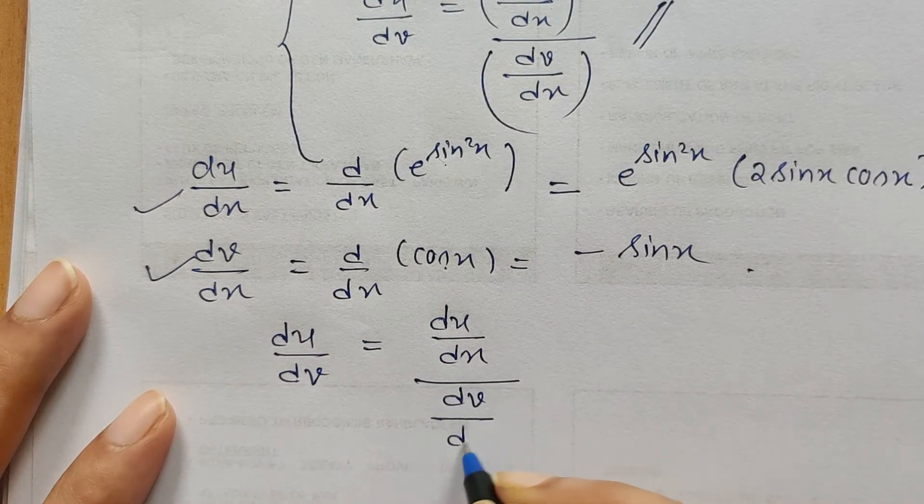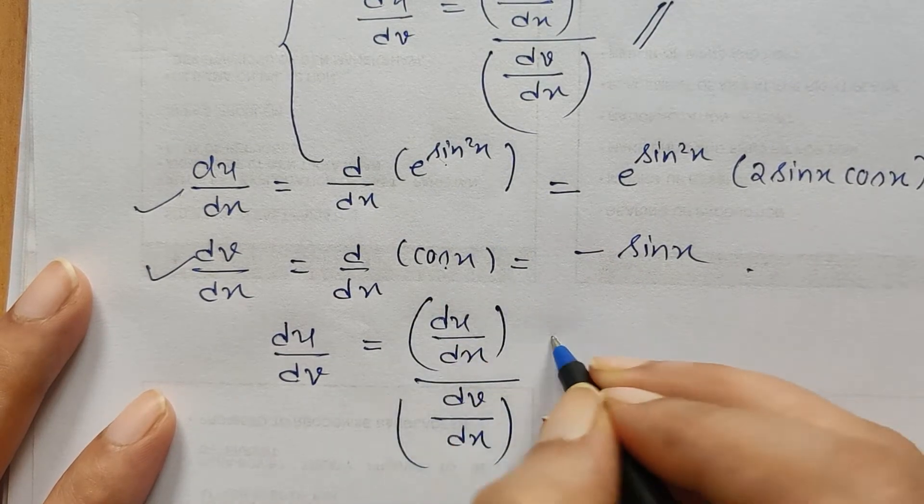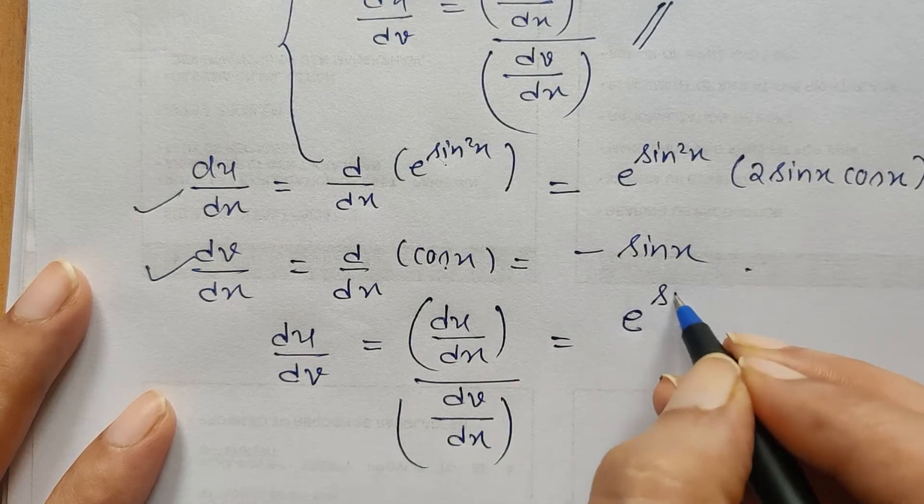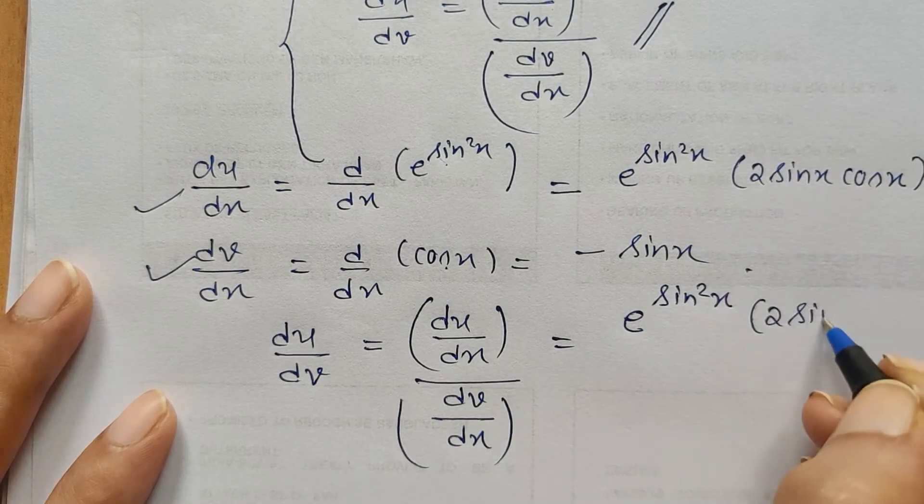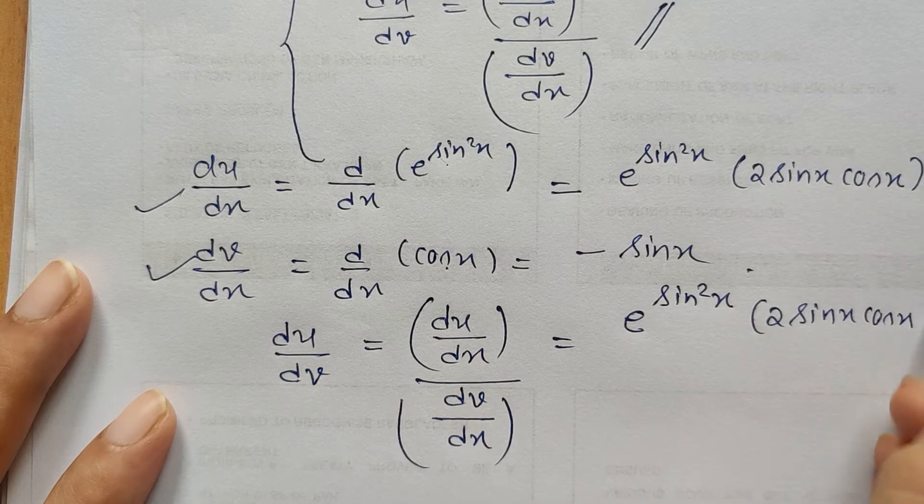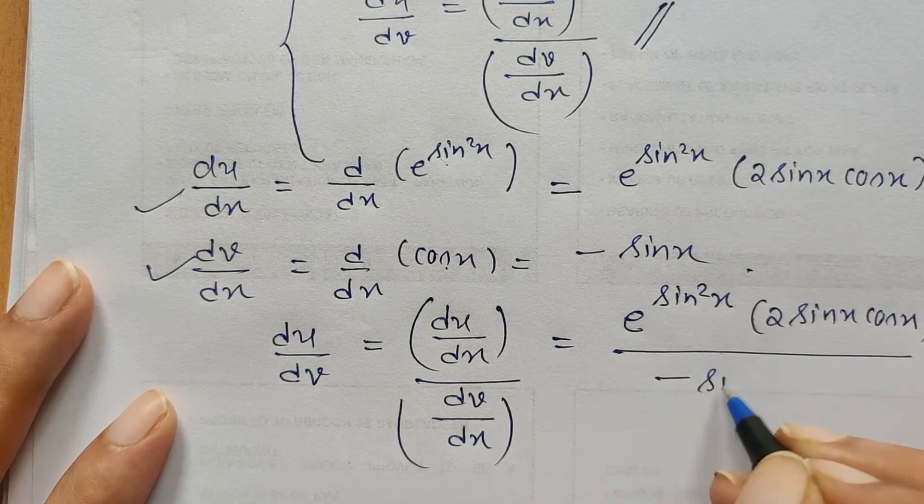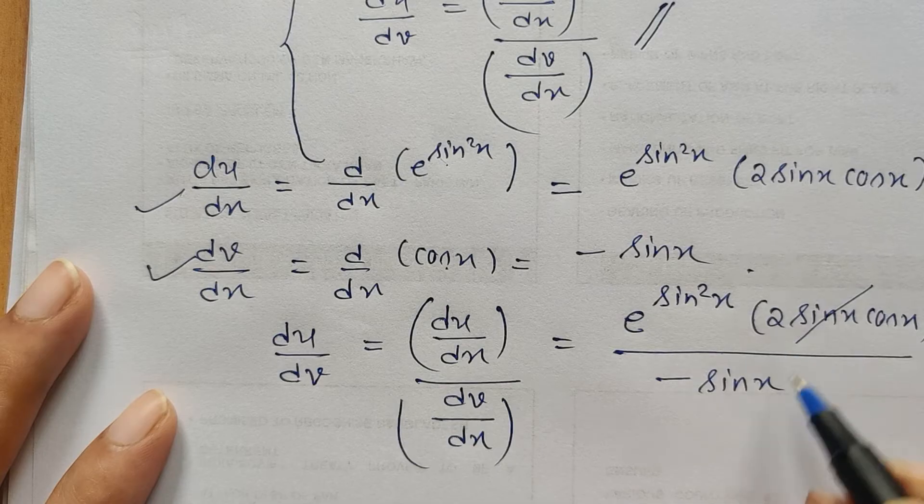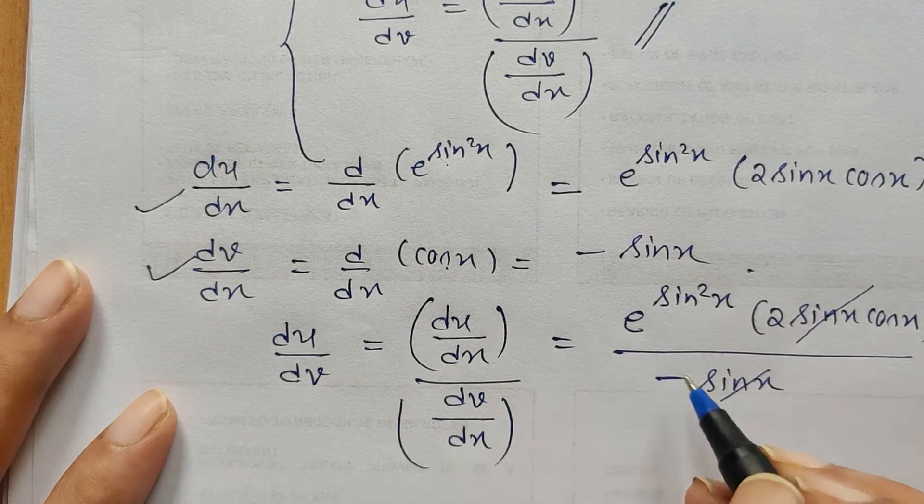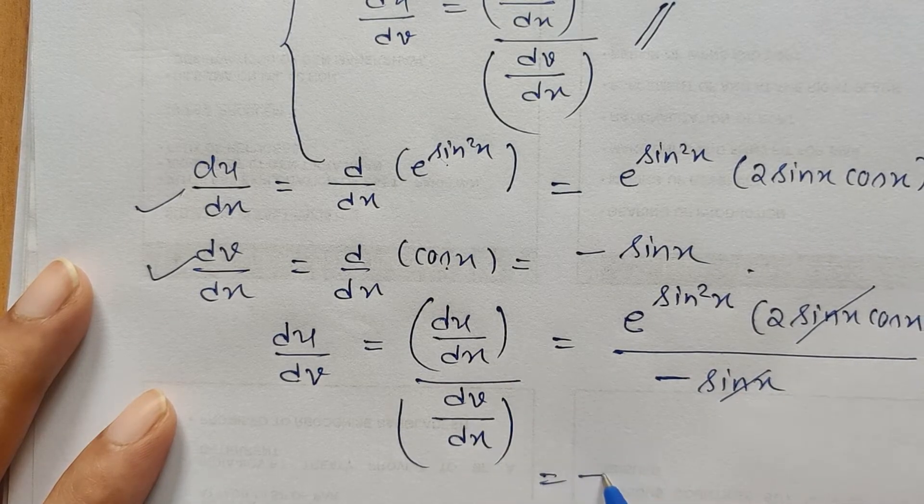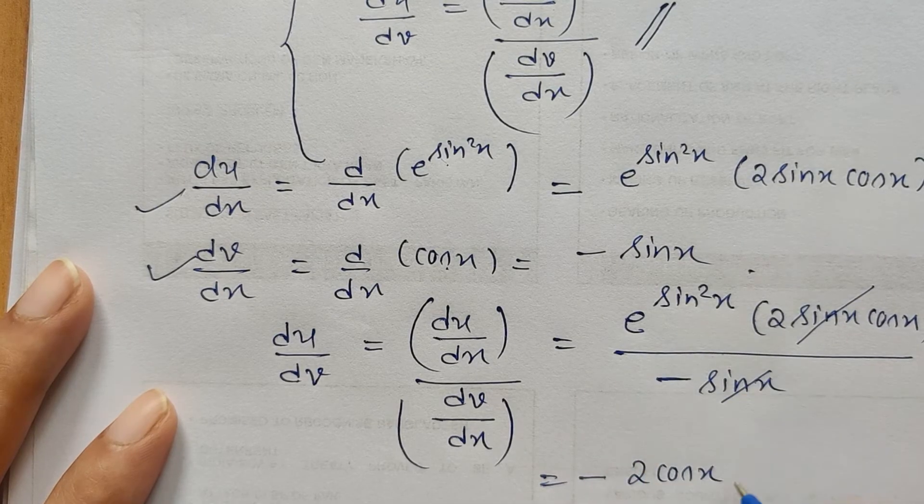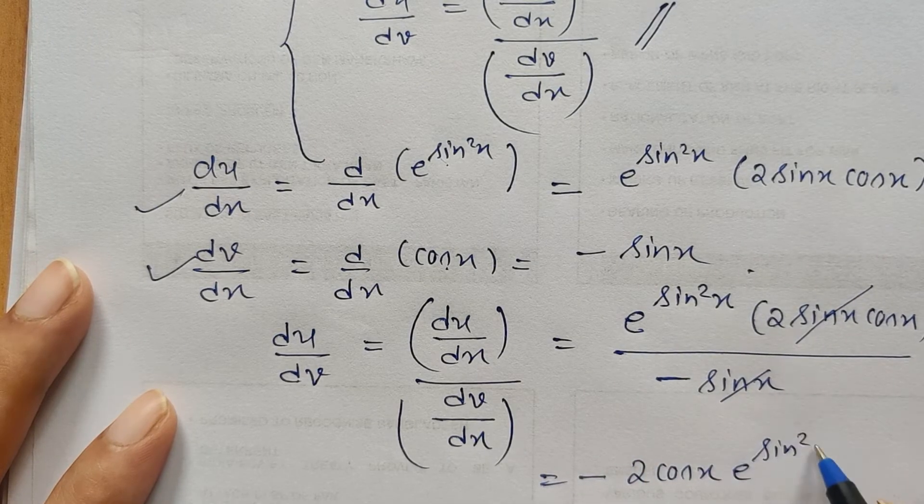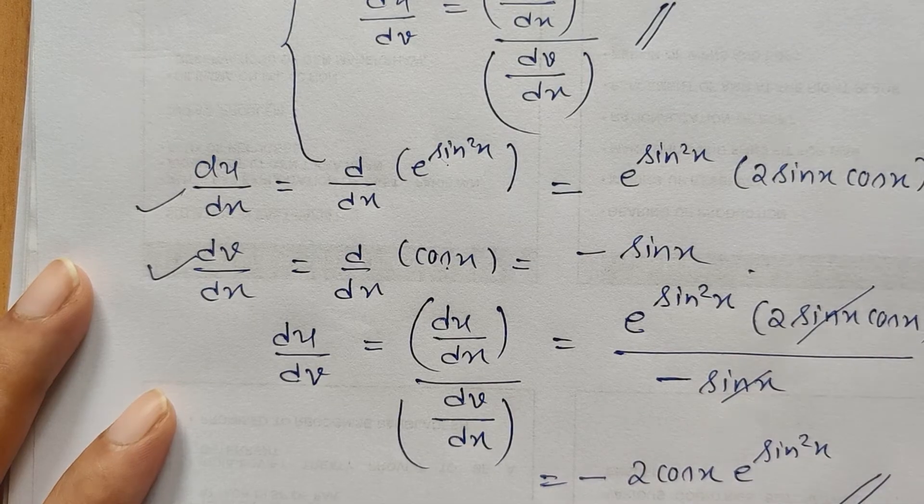Du upon dx upon dv upon dx - this will give us the solution and it gives the same answer which we have obtained in the previous video: 2 sine x cos x upon minus sin x. So here we can cancel this sine x sine x, and this minus sign goes to the numerator, and we write minus 2 cos x here and the left term e to the power sine square x.